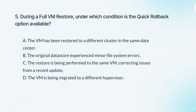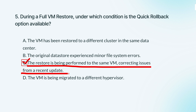The correct answer is: quick rollback can be used to fix issues from a recent update by only restoring the changed data, making it faster without having to restore the entire VM.